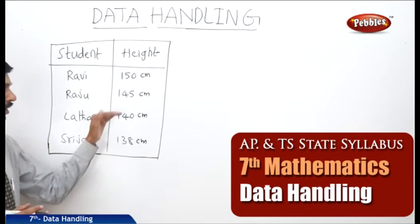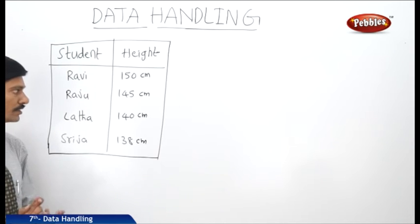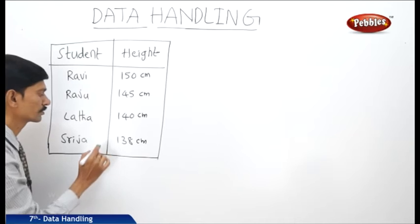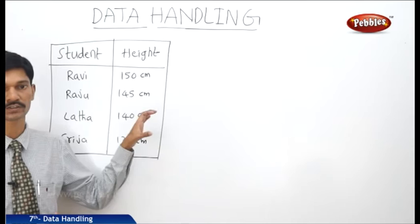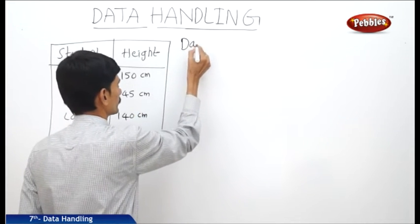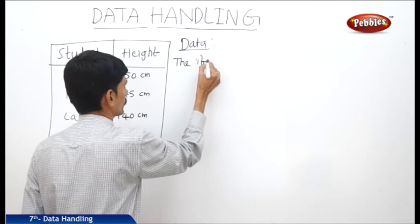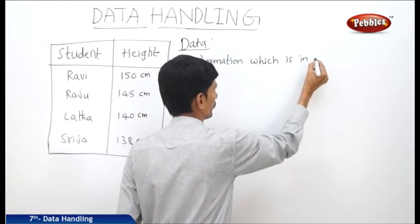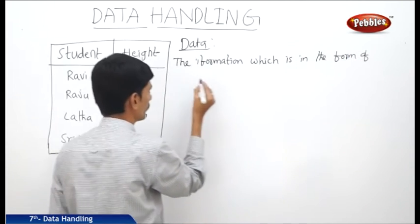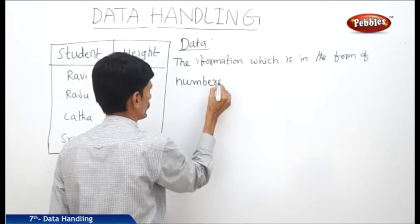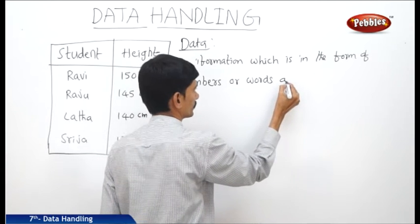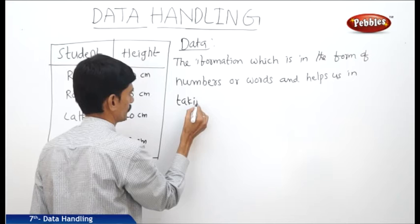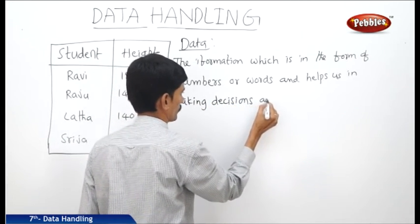So these are the heights of some students in a class. This is the information collected in the form of numbers or words. From this information we can take decisions like who is the tallest student in the class and who is the shortest student in the class. We can draw some conclusions using this information. The information which is in the form of numbers and helps us in taking decisions and drawing conclusions is called the data.